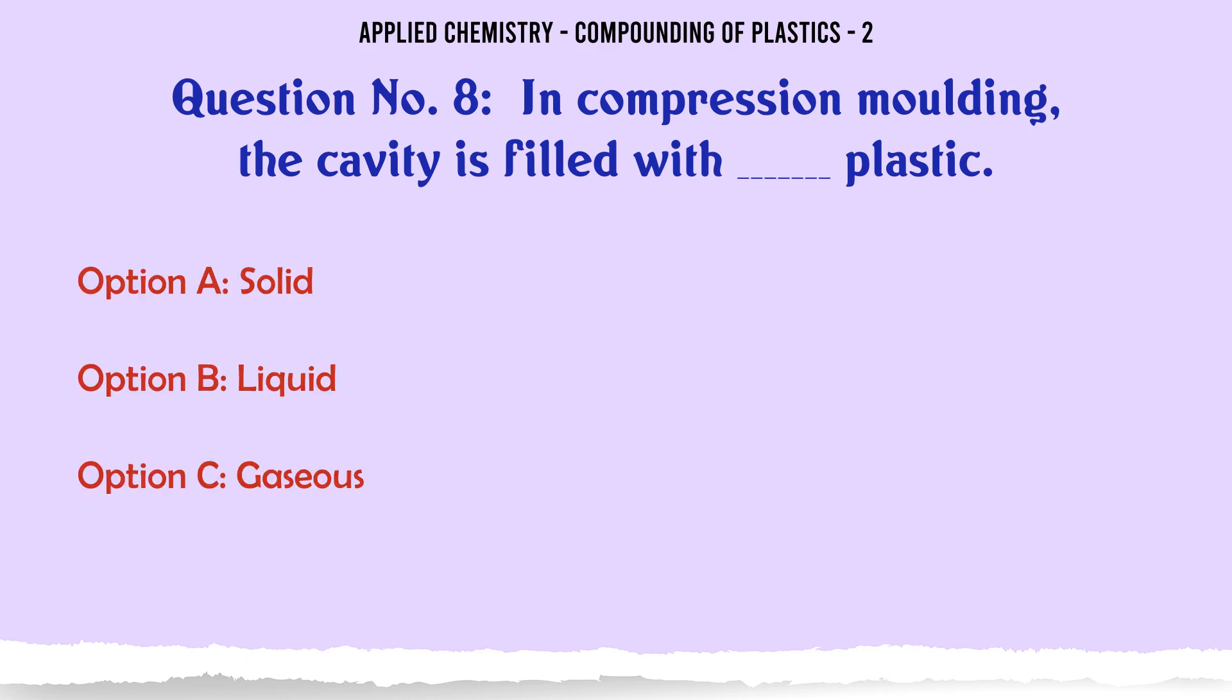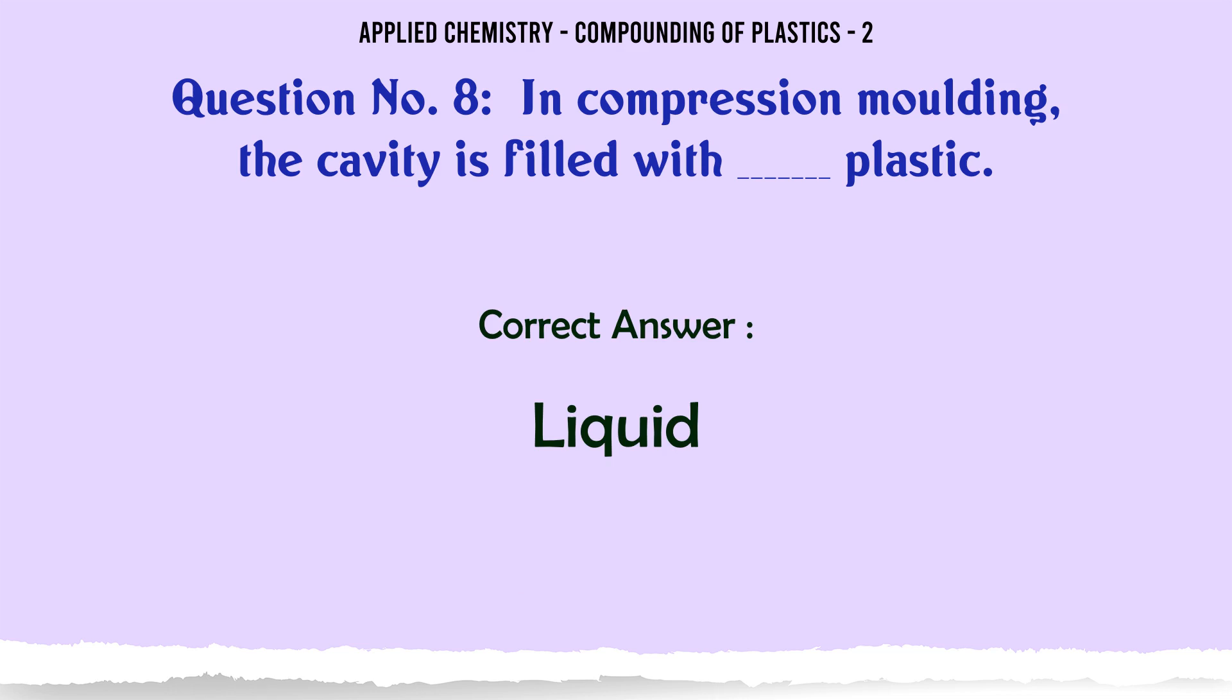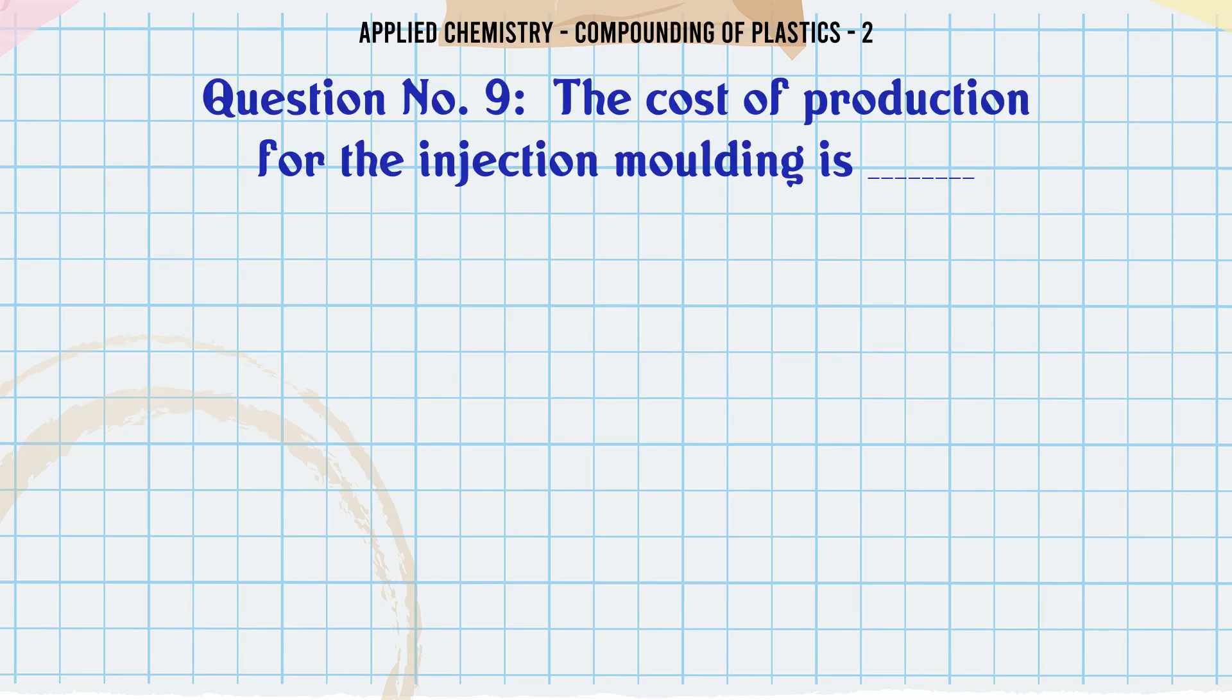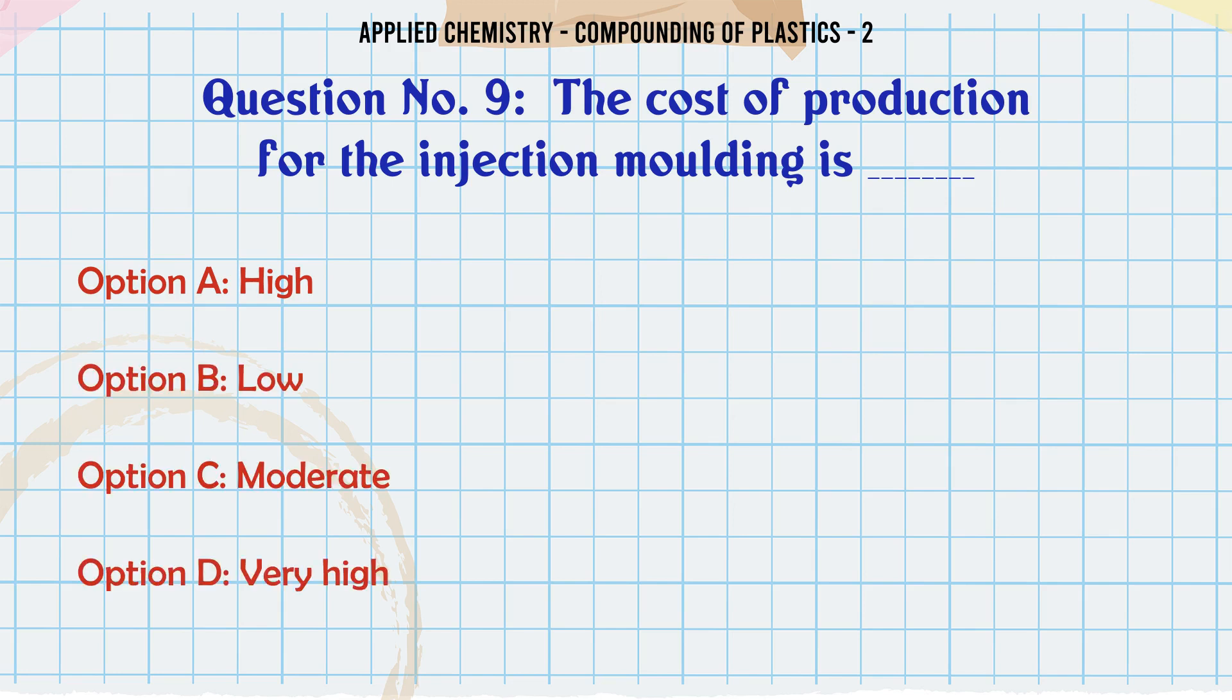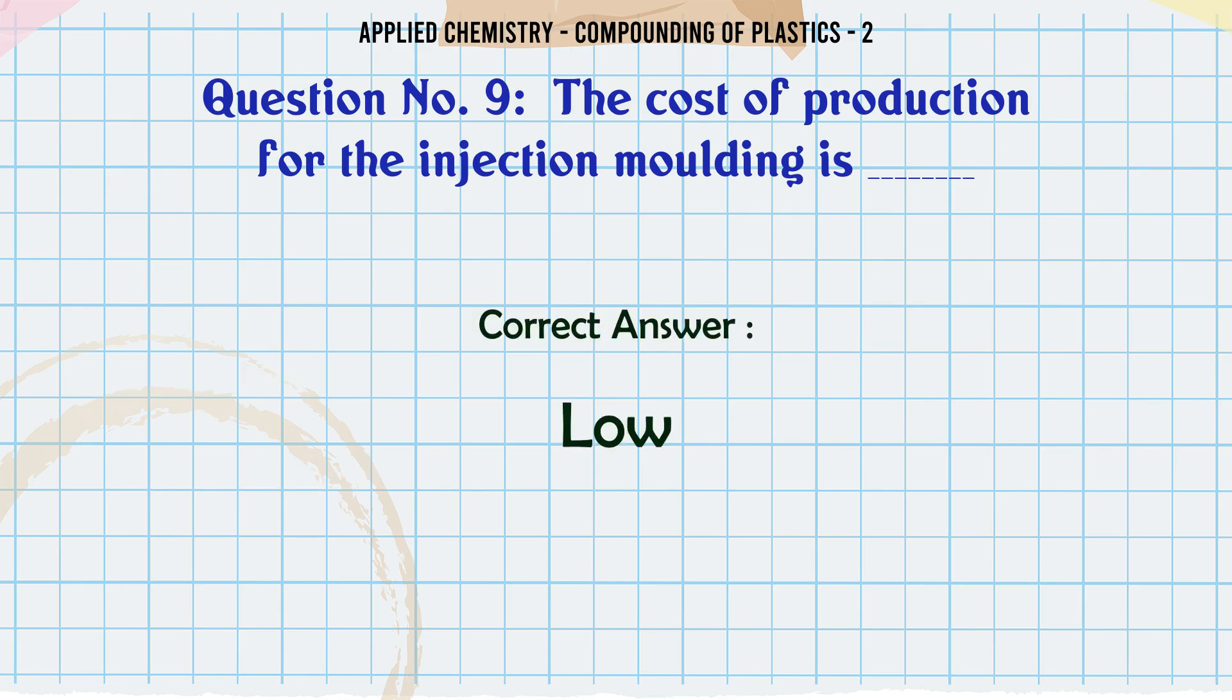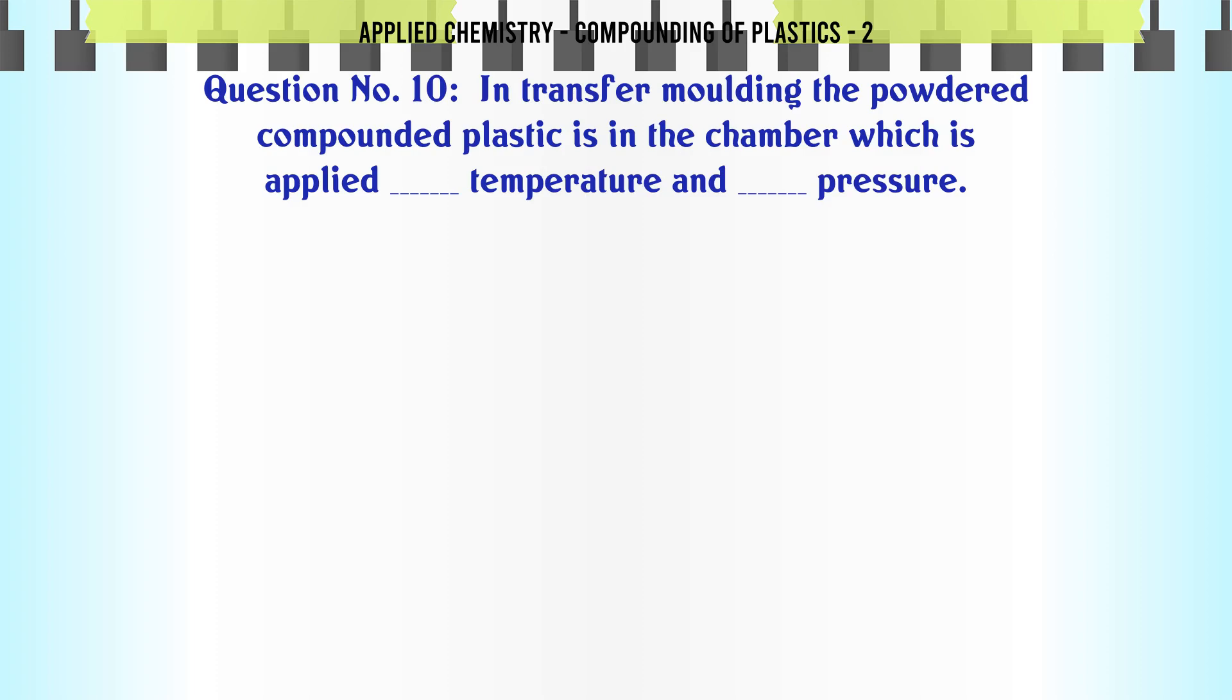A. Solid, B. Liquid, C. Gaseous, D. May be solid or liquid. The correct answer is Liquid. The cost of production for the injection molding is A. High, B. Low, C. Moderate, D. Very high. The correct answer is Low.